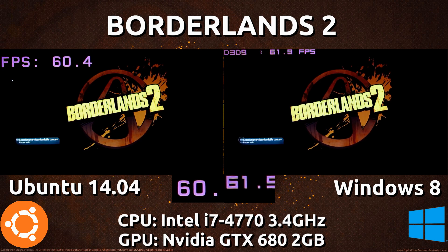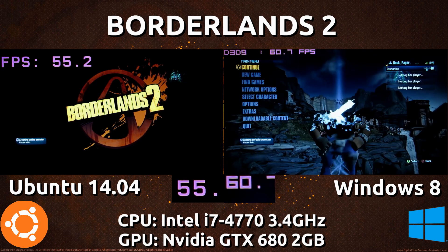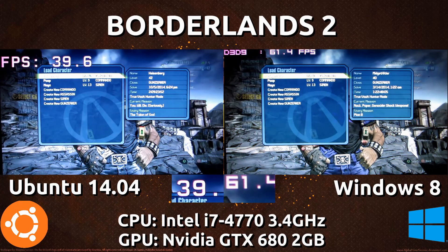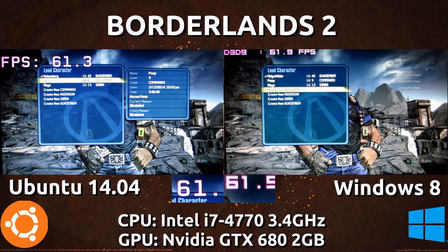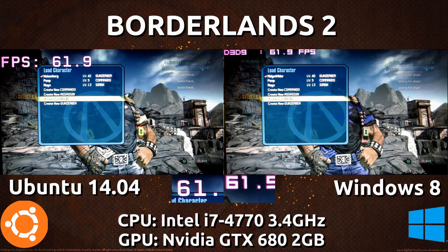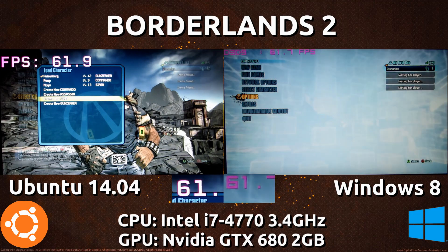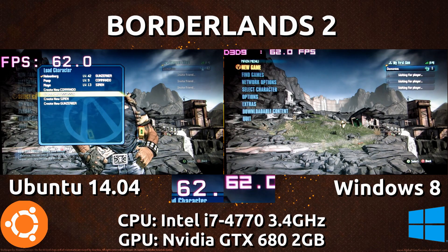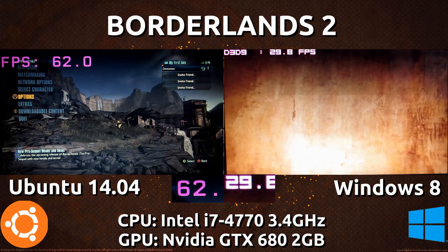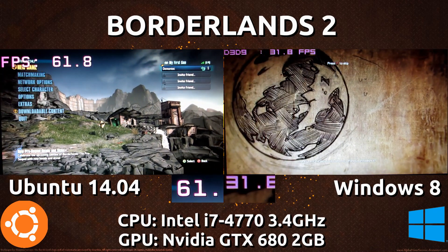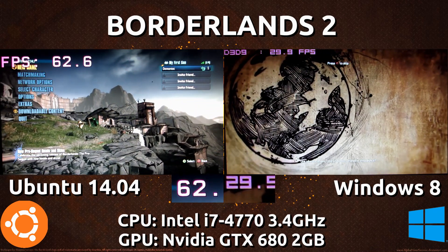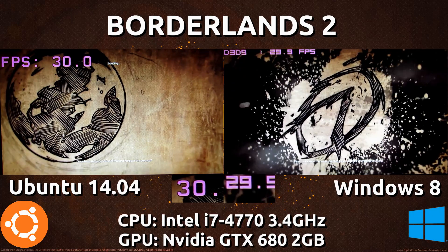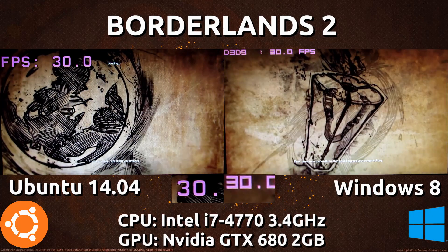We're looking at a steady 60 frames per second before entering the main menu. We see it dropped down to 18, down to 4 as it loads on the Ubuntu side — it dropped on the Windows side as well, but not as low. I'm not sure if it's a loading issue for the graphics renderer on Ubuntu or just my hard drive taking its time. I'm going to skip this intro video because it'll be 30 frames per second regardless of resolution.